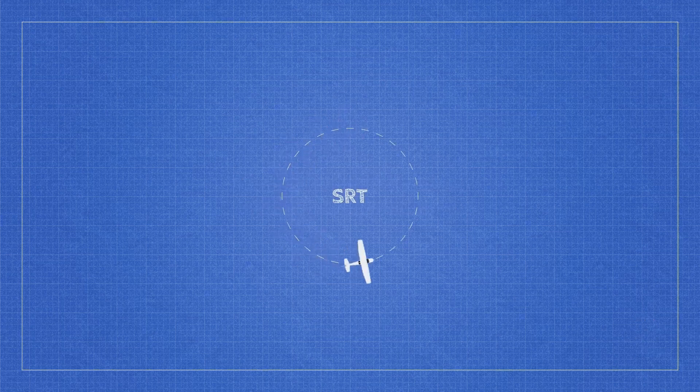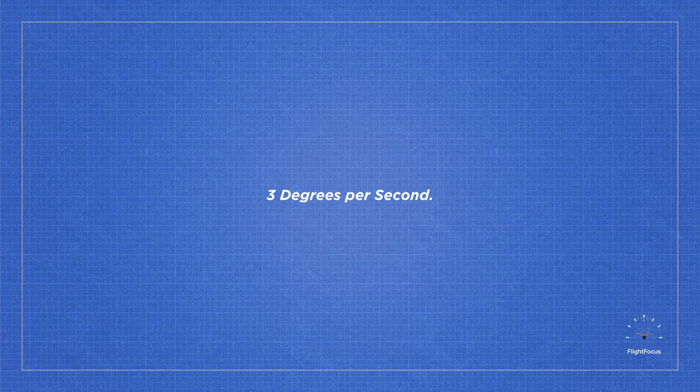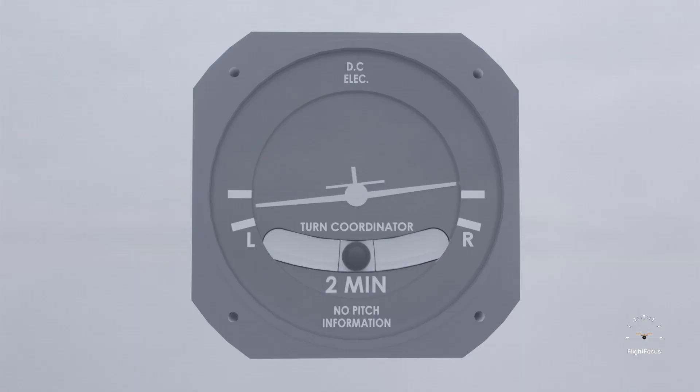The rate of turn refers to the rate at which an aircraft executes a turn, measured in degrees per second. A standard rate turn is a turn where the aircraft makes a 360-degree turn in precisely two minutes, meaning it turns at a rate of 3 degrees per second. This can be flown correctly using the turn coordinator in the cockpit.